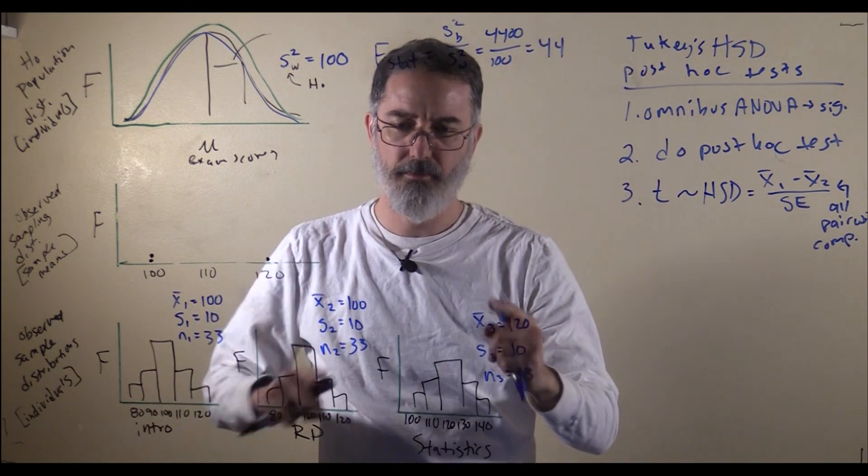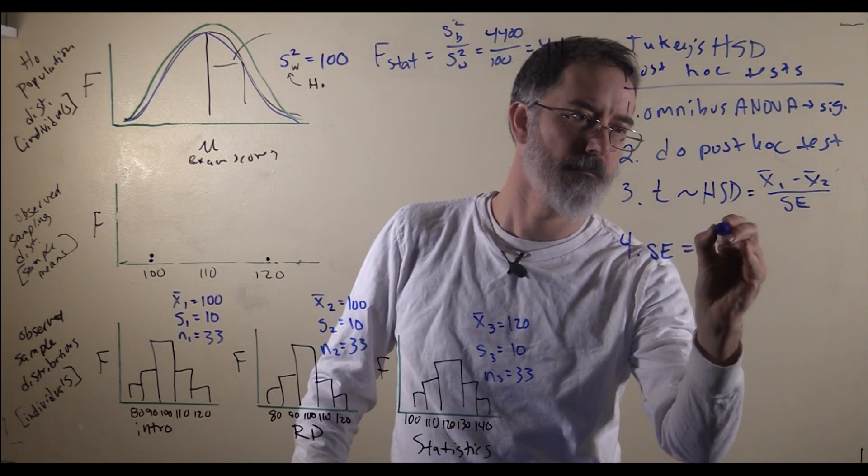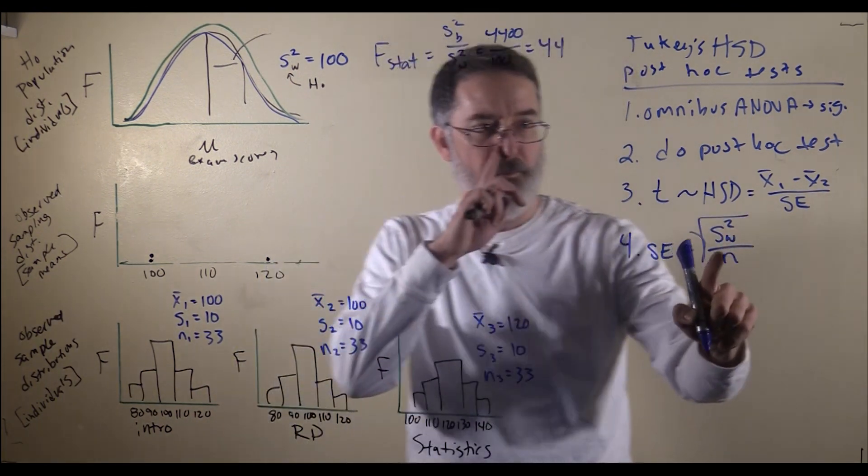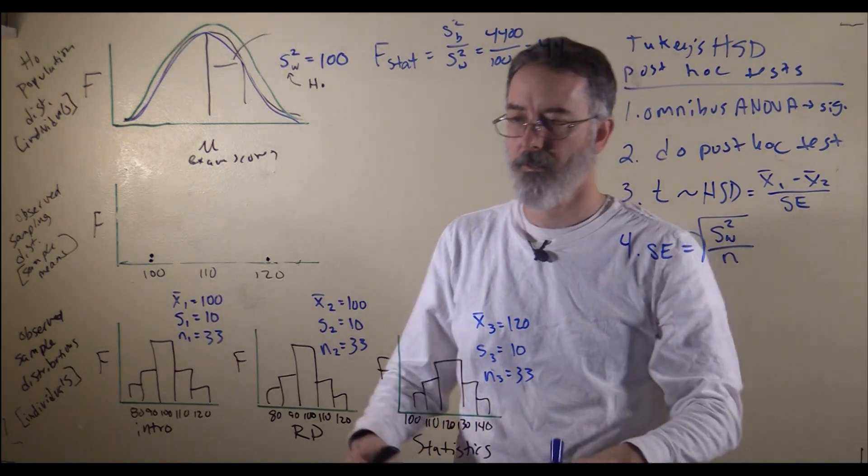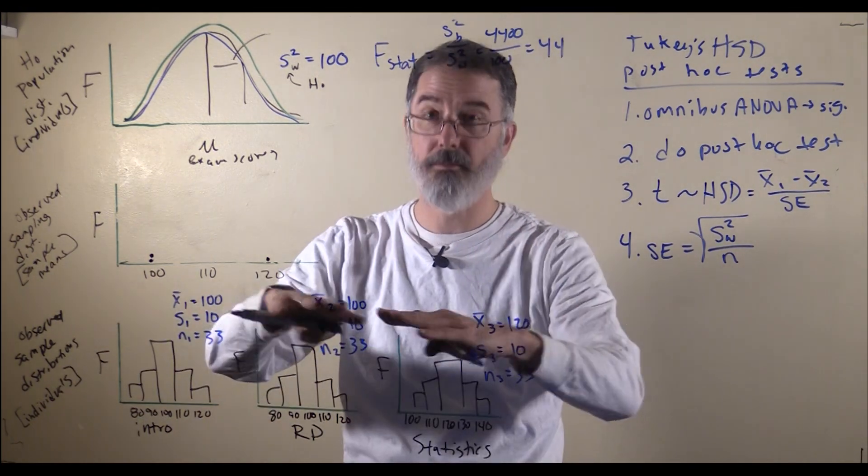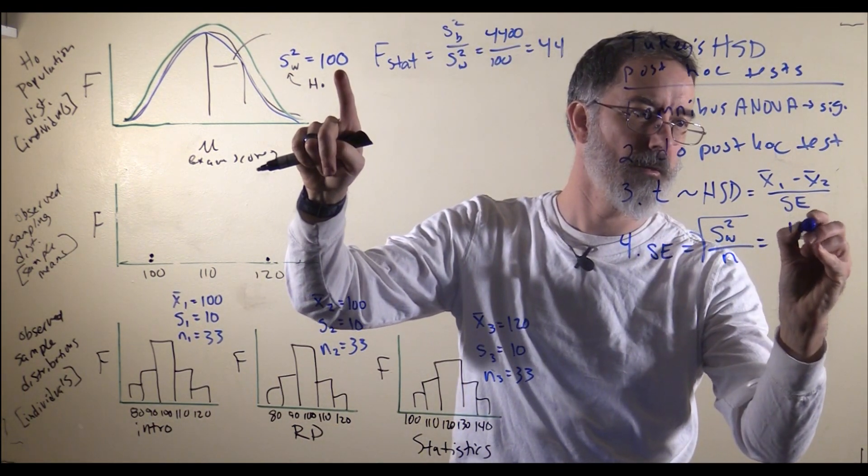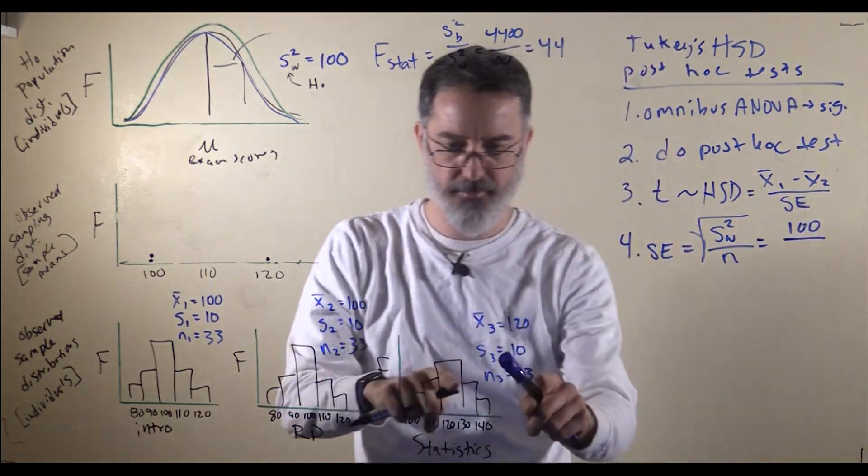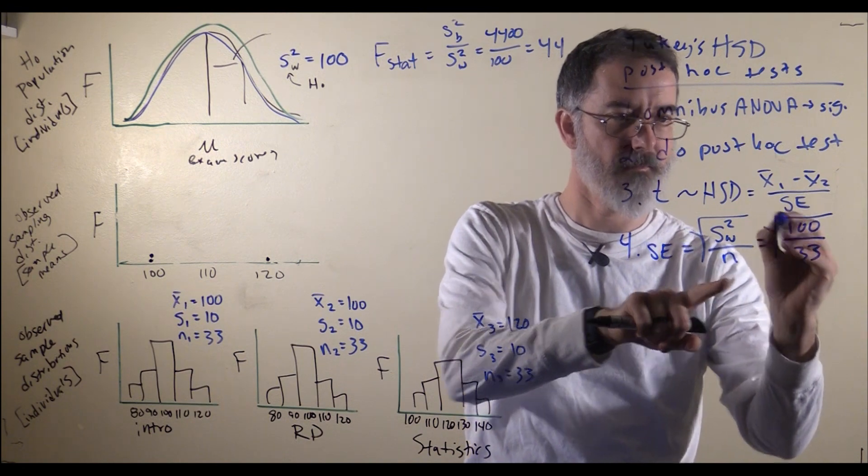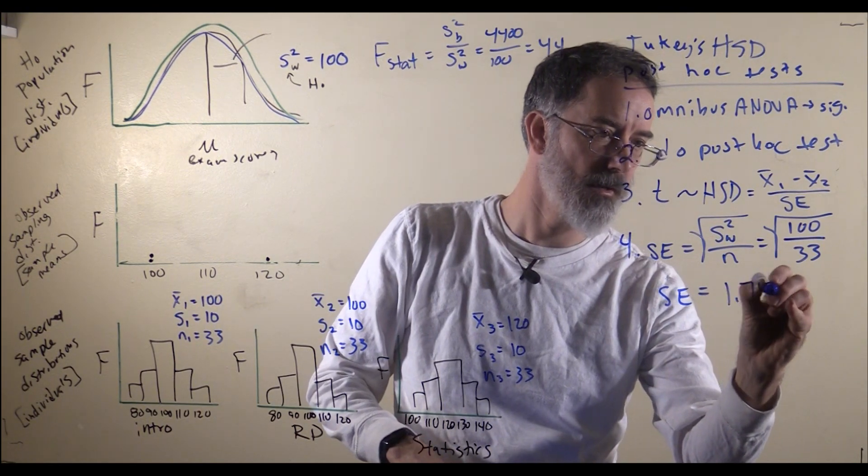I will need to calculate the standard error. We calculated the variance estimate within earlier. Remember, that was the square of this to turn this into a variance, this into a variance, this into a variance. Take these three and you average them out, and you get 100. That will be on top here, 100, divided by our sample size. Our sample size is 33. Then we need to take the square root of that. By my calculations, that was 1.74.